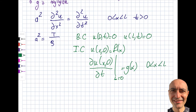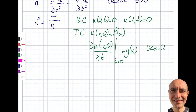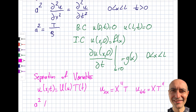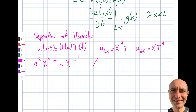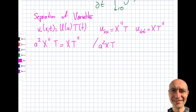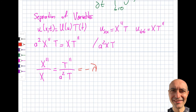The approach I'm going to use is separation of variables, which we have done multiple times. Rewriting the wave equation: a²X''T = XT''. Dividing both sides by a²XT separates the variables, giving X''/X on the left — a function of x only — and T''/(a²T) on the right — a function of t only. Since each side depends on a different variable, both must equal a constant, which we call −λ.